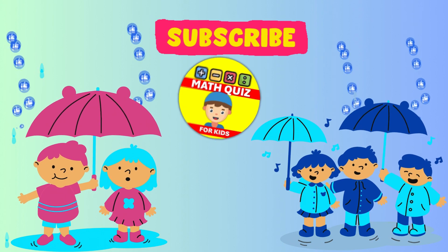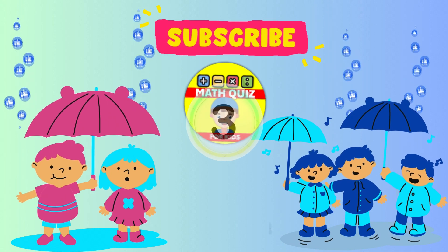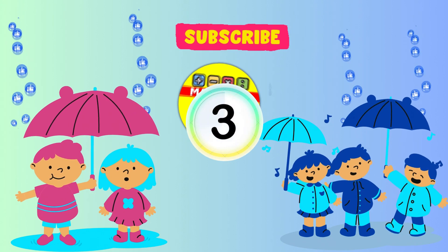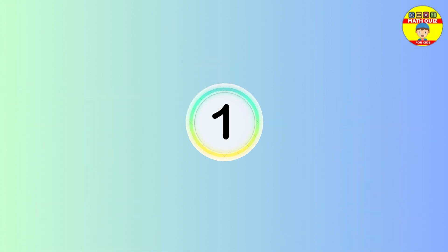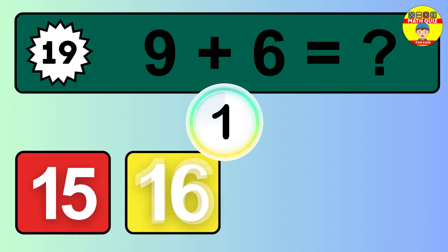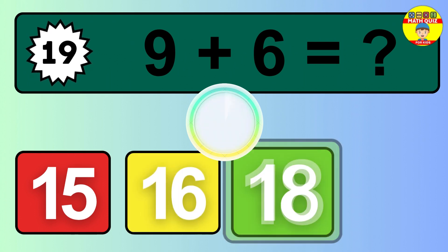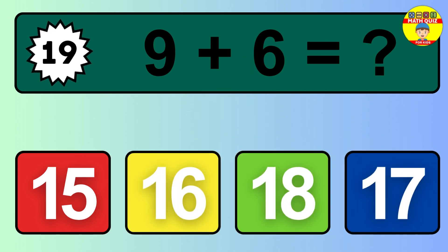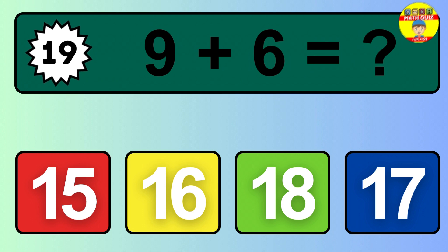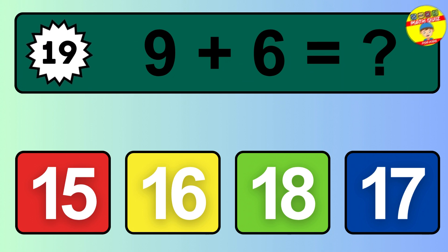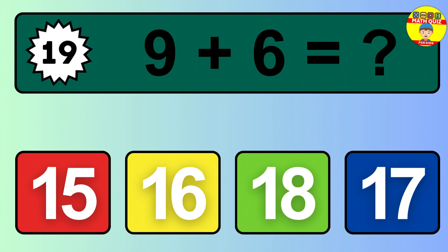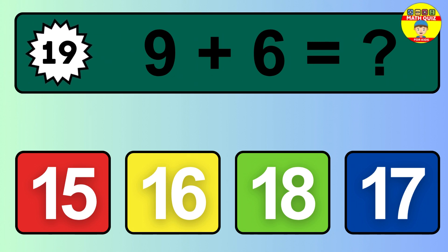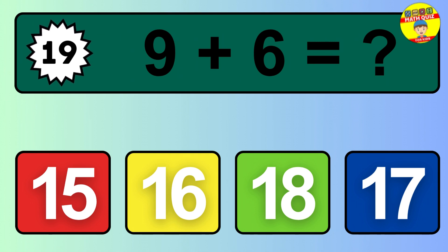Question 20. 3 plus 3 equals what? So the answer is 3 plus 3 is 6. Let's count it: 1, 2, 3, 4, 5, 6.